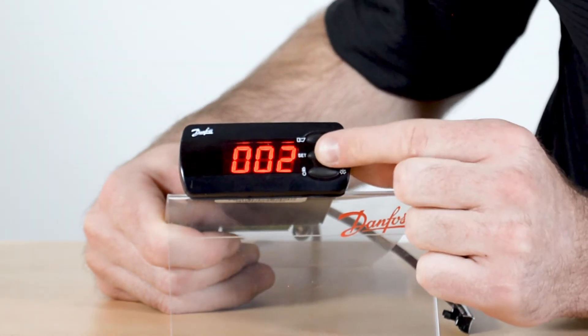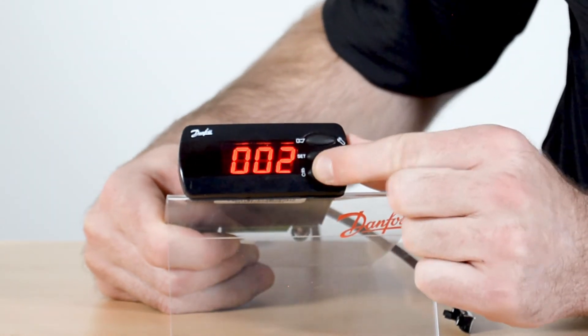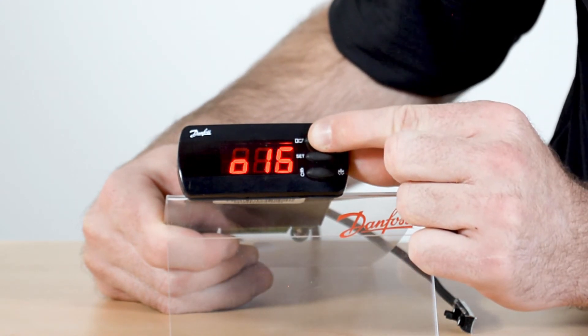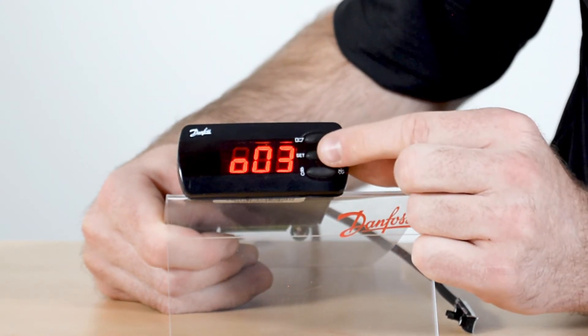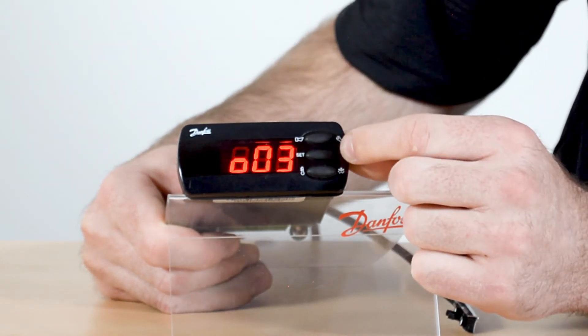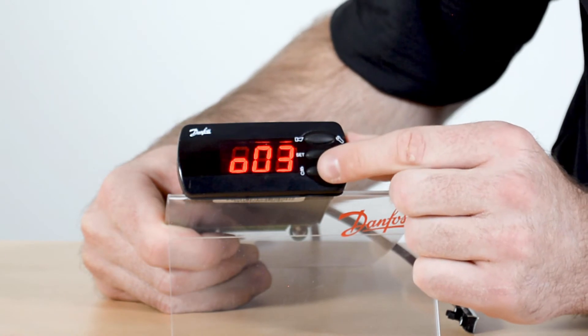So you get to O61, choose the application. It's common for us to use application 2 so that's where we leave it. The next parameter we're going to go to is O03 which is the communication address. The address is set if you have a communication card which we mentioned.